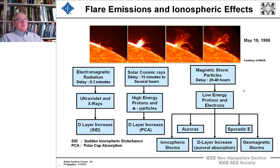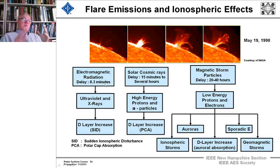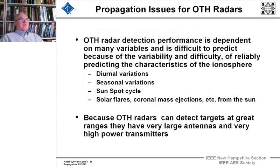These events happen all the time. You get about eight minutes' warning when electromagnetic radiation arrives, or 28 days' warning if a huge solar storm is known to be rotating back. So for the big picture: OTH radar performance is dependent on many variables, and it's difficult to predict due to the variability and difficulty of reliably characterizing the ionosphere.